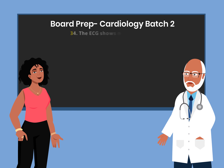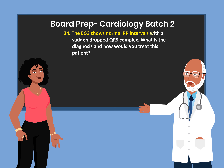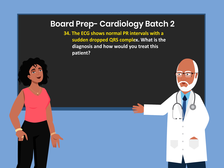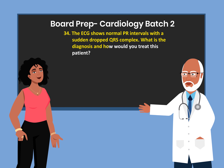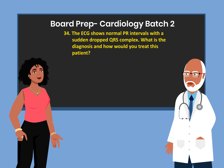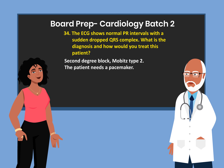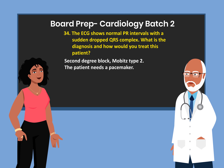The ECG shows normal PR intervals with a sudden dropped QRS complex. What is the diagnosis and how would you treat this patient? Second degree block, Mobitz type II. The patient needs a pacemaker.